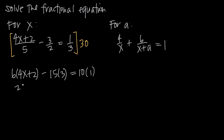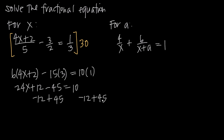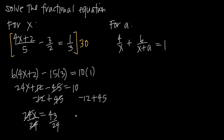Now we distribute: 6 times (4x plus 2) gives us 24x plus 12; 15 times 3 is negative 45; and 10 times 1 is 10. We then subtract 12 and add 45 to both sides, canceling the 12 and the 45 on the left, leaving 24x. On the right, 10 plus 45 is 55, and 55 minus 12 is 43. Dividing both sides by 24, we get x equals 43 over 24.